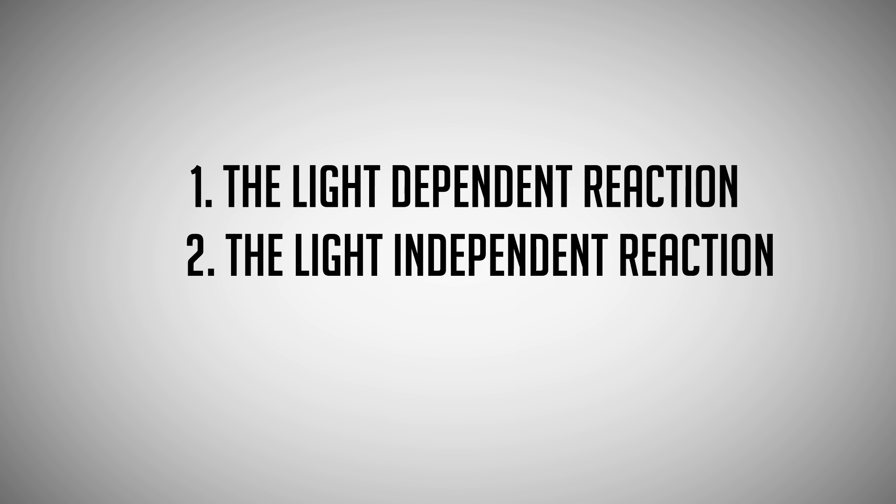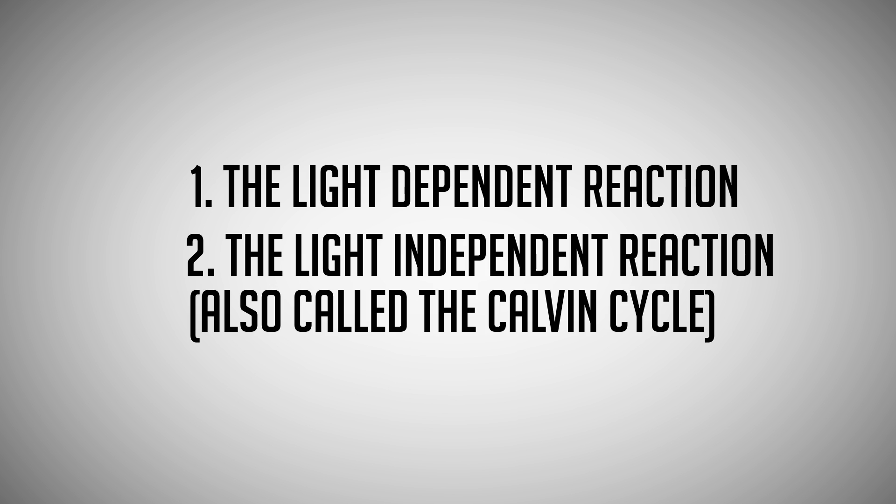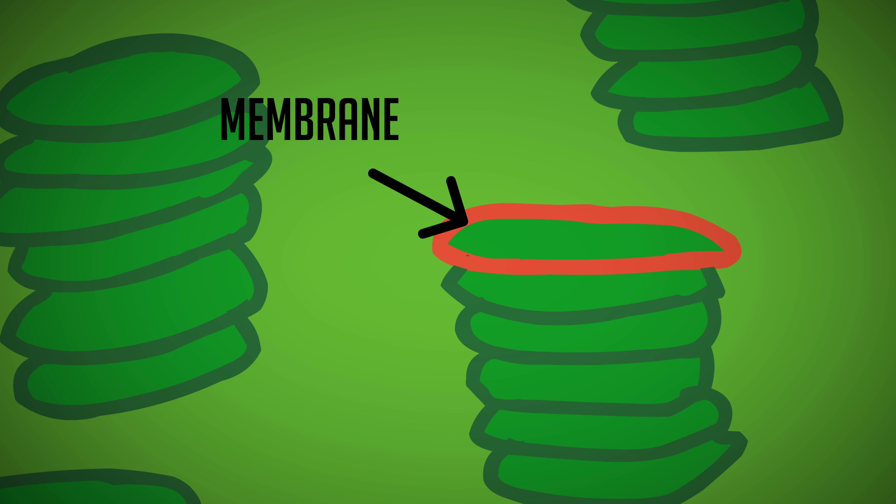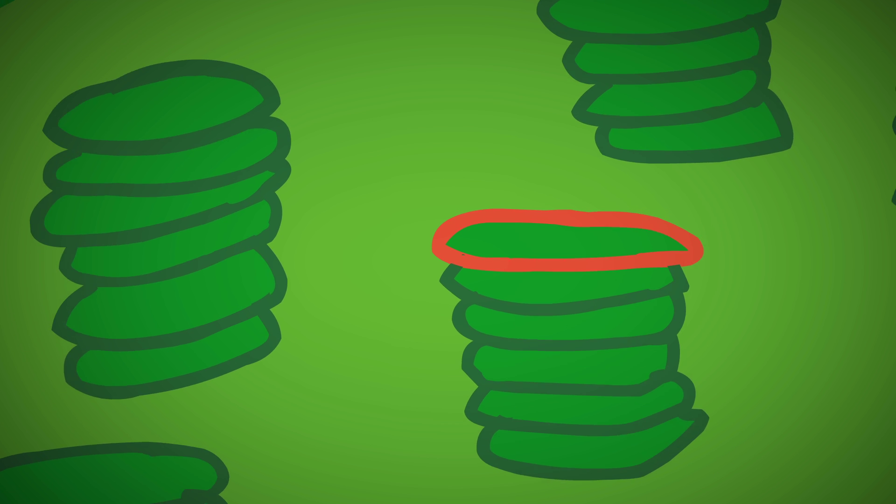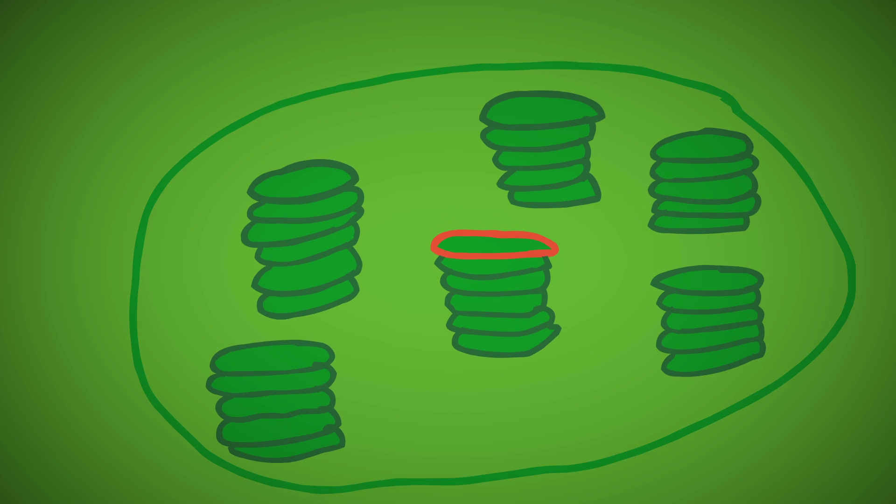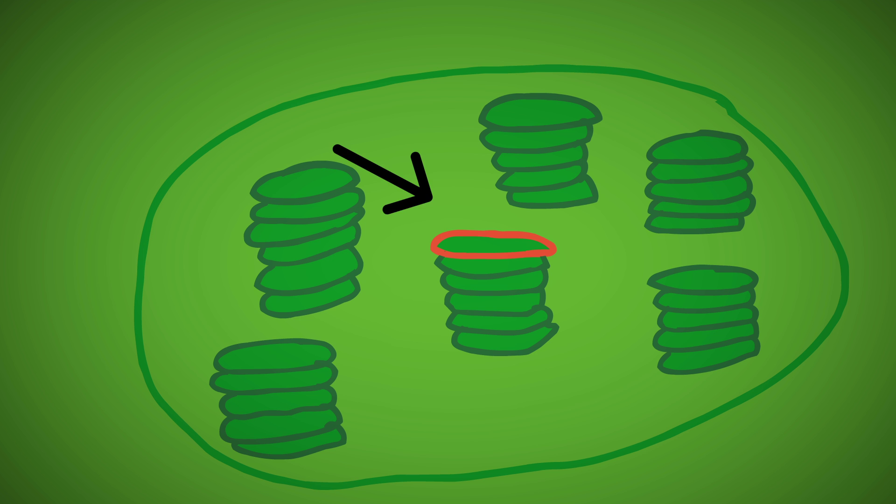Photosynthesis happens in two stages: the light-dependent reaction and the light-independent reaction, also called the Calvin Cycle. The light-dependent reaction happens in the thylakoid membrane. The Calvin Cycle takes place in the empty space within the chloroplast, called the stroma.